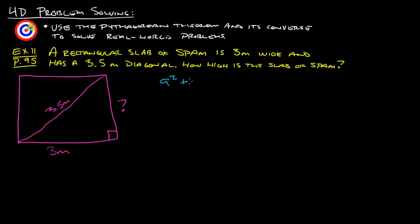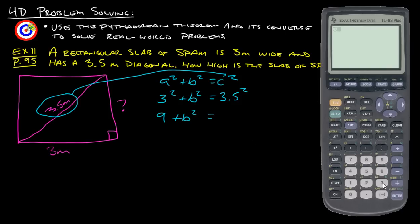We've got a squared plus b squared equals c squared. Again, the important one is this 3.5 needs to be our c squared. So over here we can have 3 squared plus b squared. That gives us 9 plus b squared equals... Let's see what 3.5 squared is.